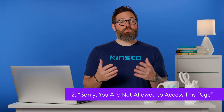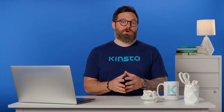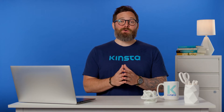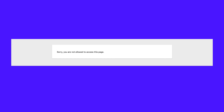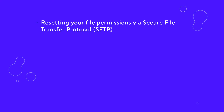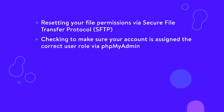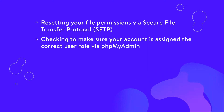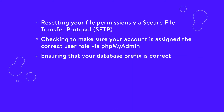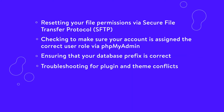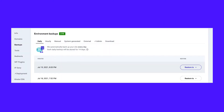File permissions determine who can edit which files on your WordPress site. This keeps your website safe from hackers who might want to insert malicious code. However, if your permission settings are incorrect, they can inadvertently block you or well-meaning users from accessing your site. This can result in an error that reads: "Sorry, you're not allowed to access this page." There are many possible solutions to this issue. You may want to try resetting your file permissions via SFTP, checking to make sure your account is assigned the correct user role via phpMyAdmin, ensuring that your database prefix is correct, or troubleshooting for plugin and theme conflicts. In the worst case scenario, you can also restore a backup of your site or reset WordPress.